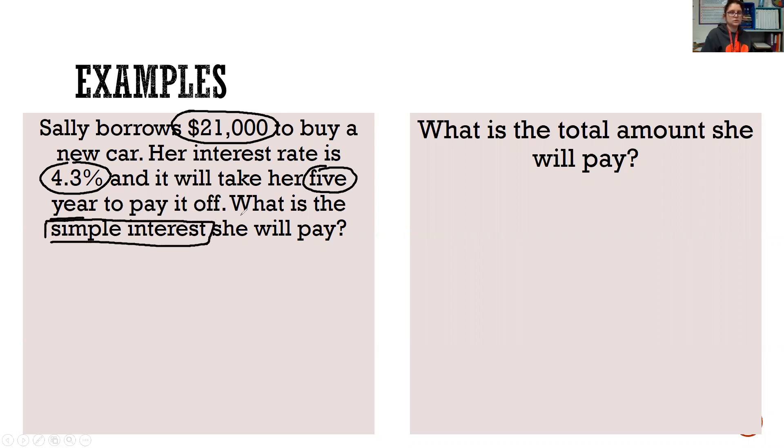So we're looking for simple interest. We're looking for I. So I equals our principal. It's $21,000. 4.3 divided by 100 equals 0.043 times five years. So $21,000 times 0.043 times five gives us that our interest is $4,515.